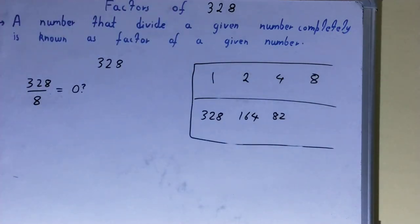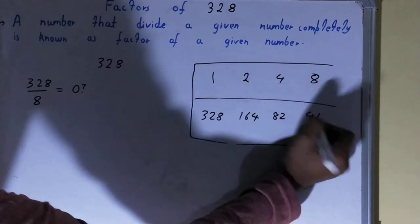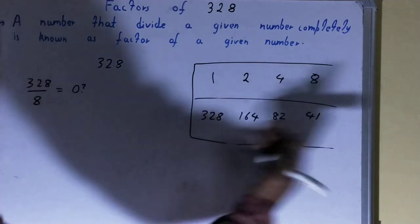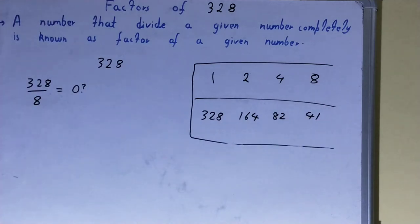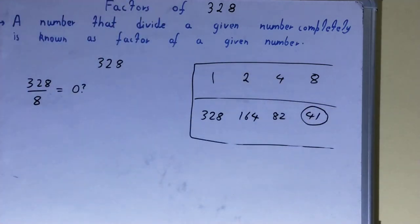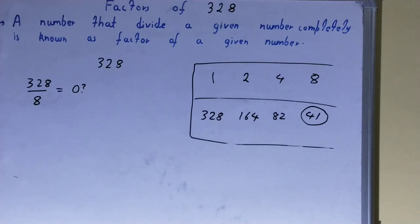8 times what equals 328? It will be 41 times, so 41 will also be a factor. Now, one thing to note carefully: in the last row you have got a prime number in the form of 41. Whenever you spot a prime number in the last row, your work is done — you don't need to check any further.